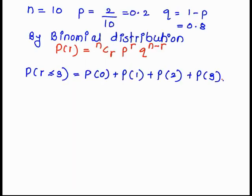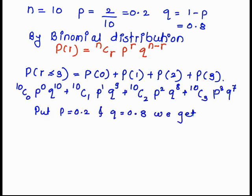Probability of zero plus probability of one plus probability of two plus probability of three. By substituting the value of n, r, p, and q, we get 10C0 p raised to 0 q raised to 10, 10C1 p raised to 1 q raised to 9, 10C2 p raised to 2 q raised to 8, 10C3 p raised to 3 q raised to 7.